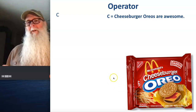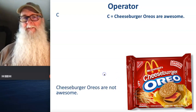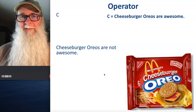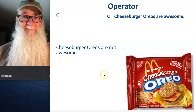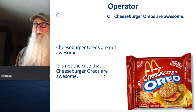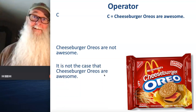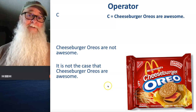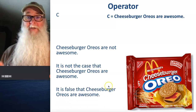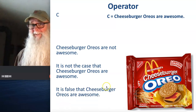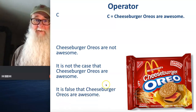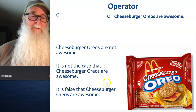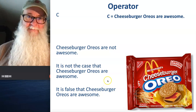But what if we also wanted to be able to say 'cheeseburger Oreos are not awesome,' or 'it's not the case that cheeseburger Oreos are awesome,' or 'it's false that cheeseburger Oreos are awesome'? How would we represent those statements?